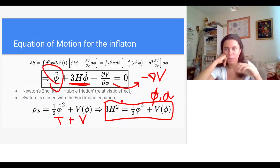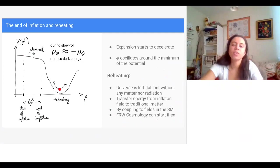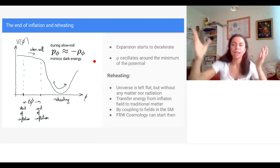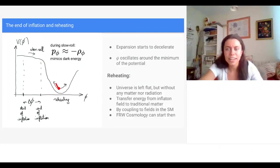In practice it's quite hard to solve these equations exactly. More generally we use the slow-roll approximation: under certain slow-roll conditions we can neglect some terms in both equations and directly integrate to obtain the inflaton as a function of time. During the slow-roll phase it can be shown that the pressure is approximately minus the energy density — which is the equation of state for dark energy, giving exponential expansion of the scale factor.